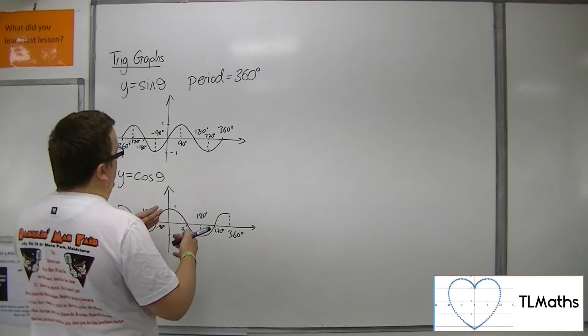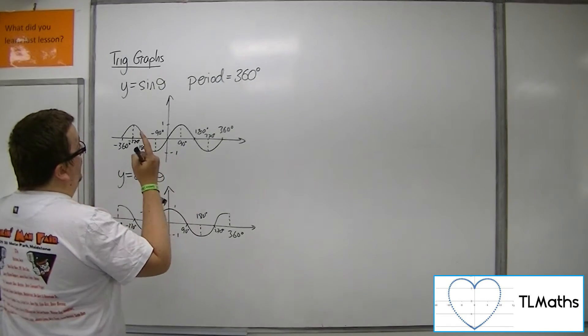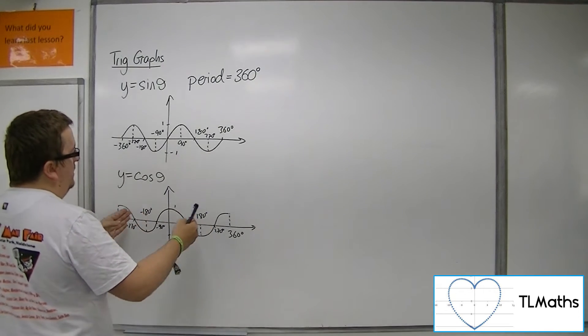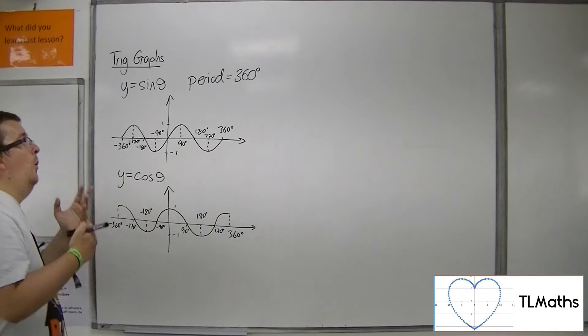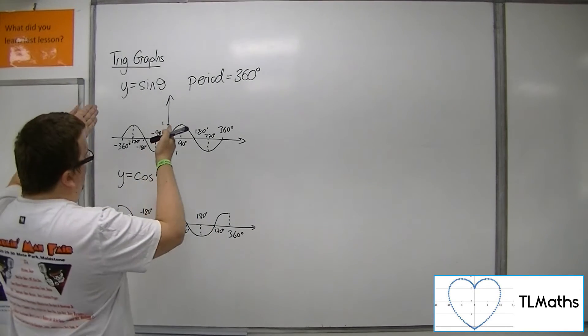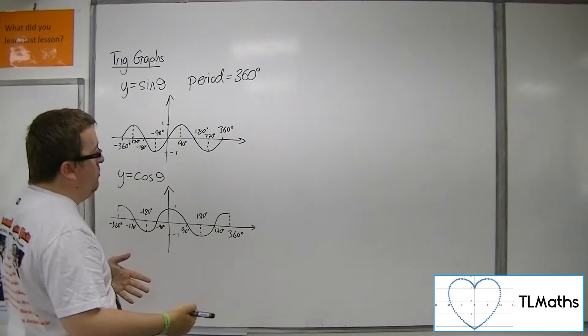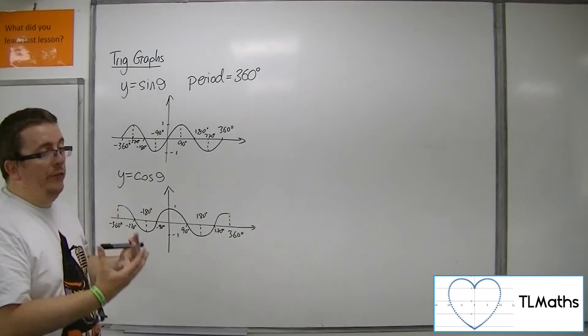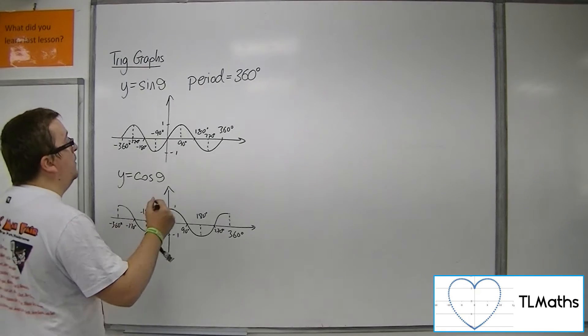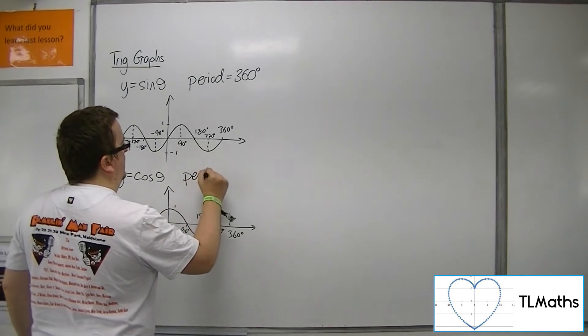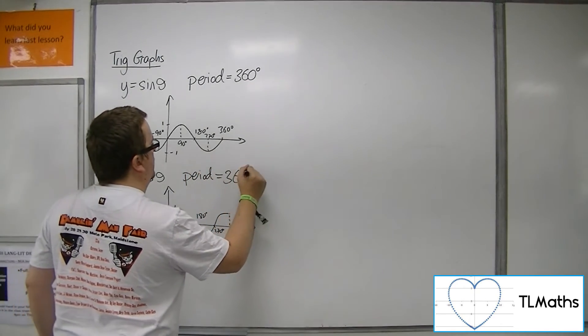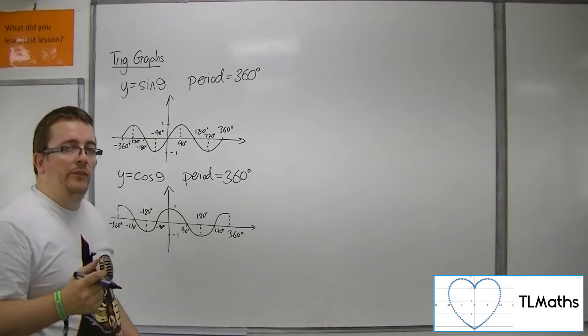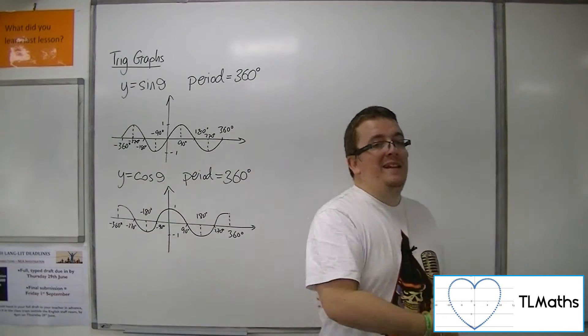Cosine is the sine curve shifted 90 degrees to the left, or you could think of sine as the cosine curve shifted 90 degrees to the right. Either way, they both have the same period. Cosine also has a period of 360 degrees, the distance over which it repeats itself.